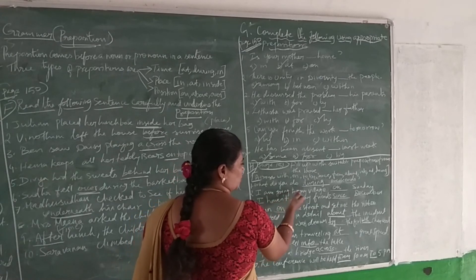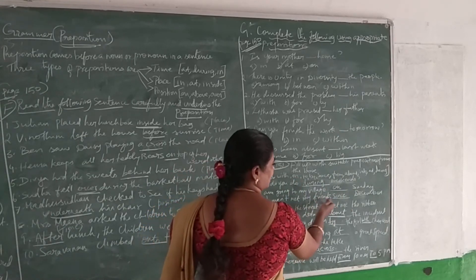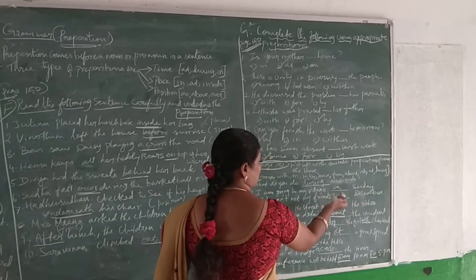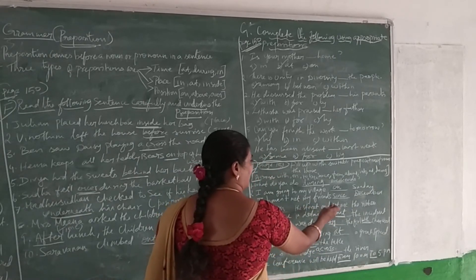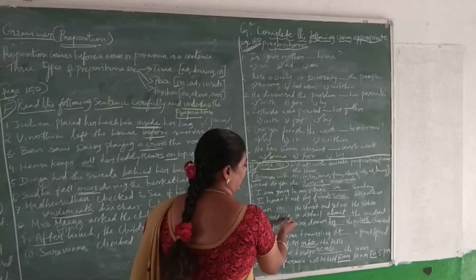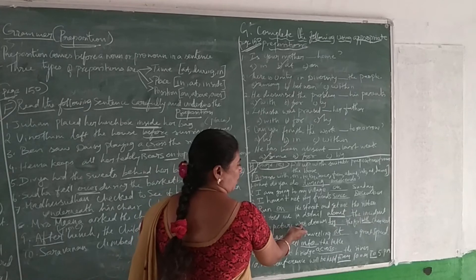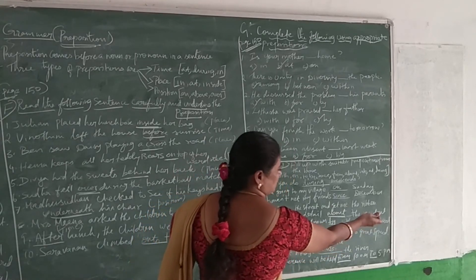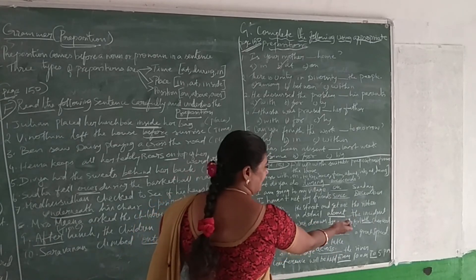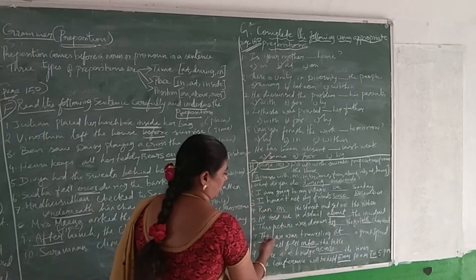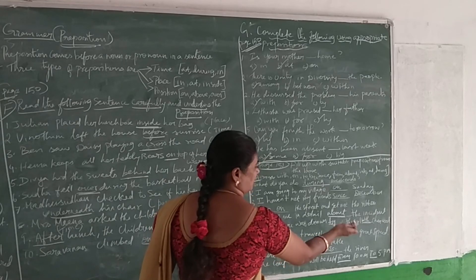'I haven't let my friends six visible.' 'Run on the street and get me the ribbon.' 'He told me in detail about that incident.' 'This picture was drawn by a girl with charcoal.' 'The car was travelling at high speed.' 'The ball fell into the lake.'